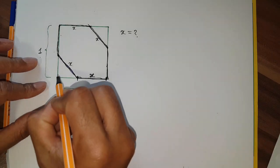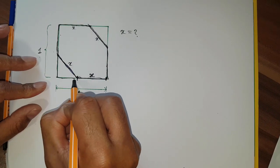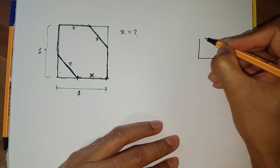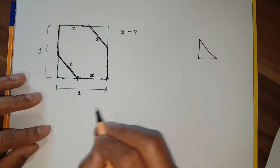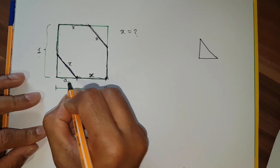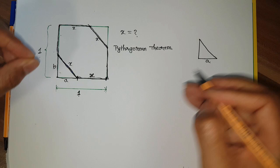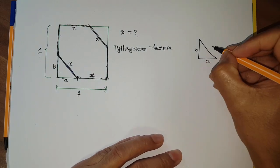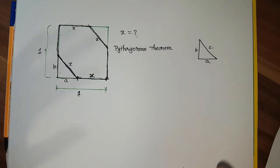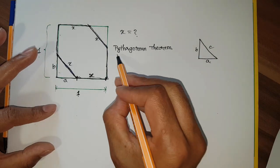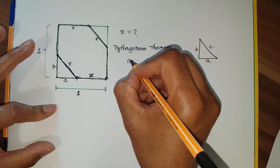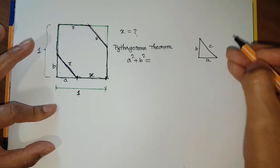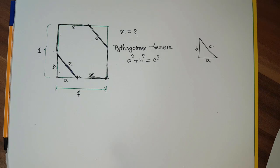You can notice here - if you consider this part only, this is a right angle triangle where this angle is 90 degrees. Let me rewrite this right angle triangle. Let us consider this length is A, which is represented here, and that length is B. I'm just rewriting this triangle here to make it simple. Let us consider this length is C.